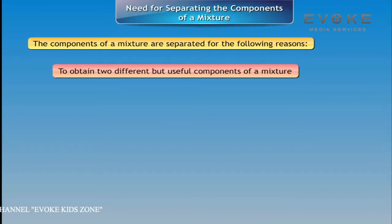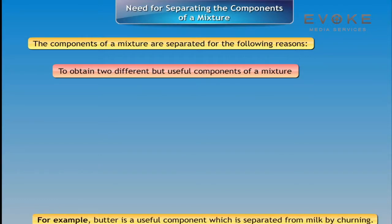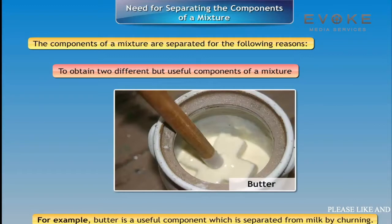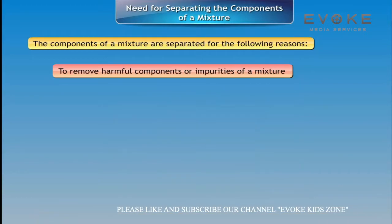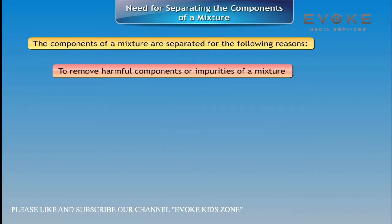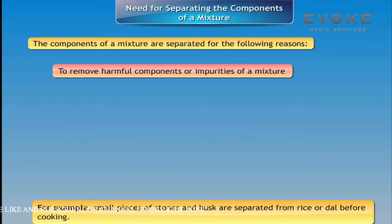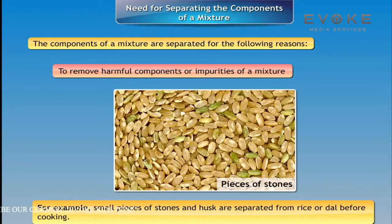Need for separating the components of a mixture: The components of a mixture are separated for the following reasons. First, to obtain two different but useful components of a mixture. For example, butter is a useful component which is separated from milk by churning.